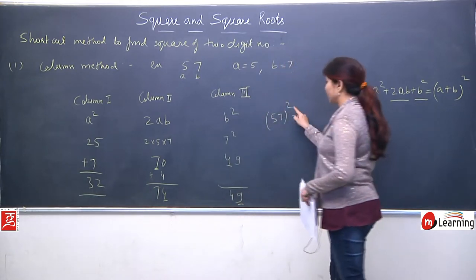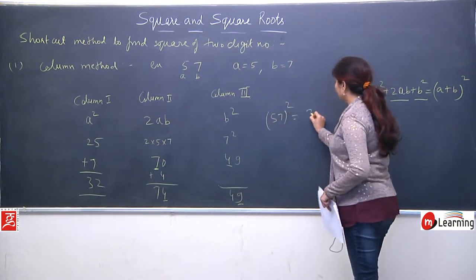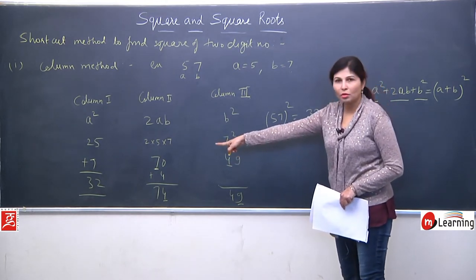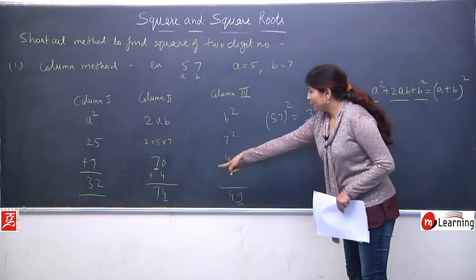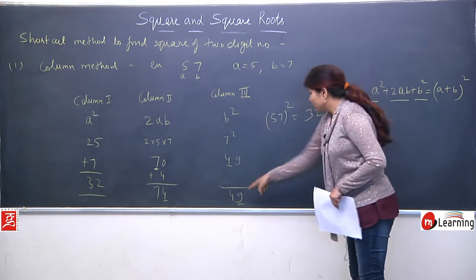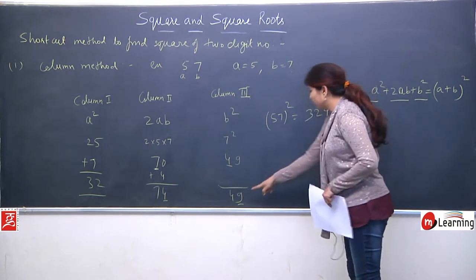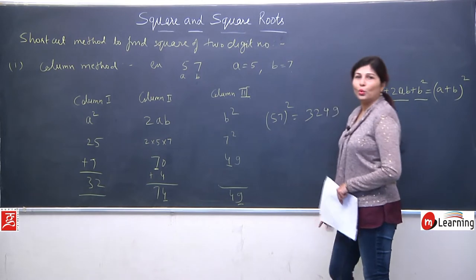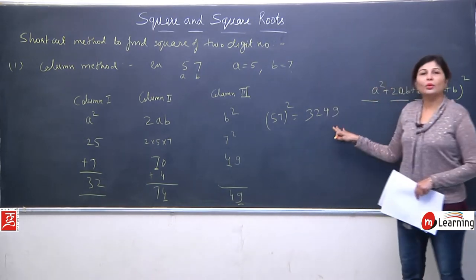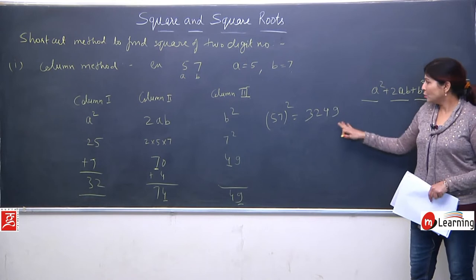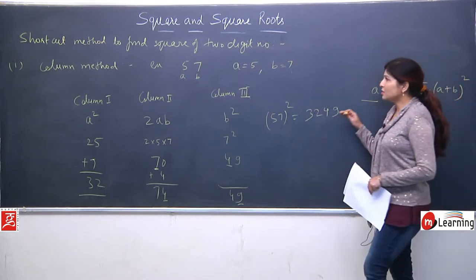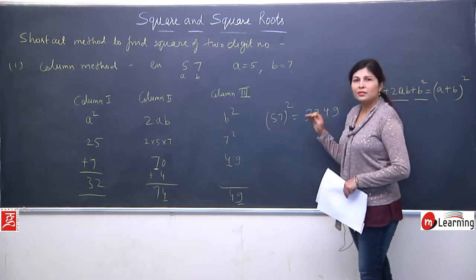The square of 57: from the a² column we take the full final number (32), from the 2ab column we take only the unit place digit (0), and from b² column only the unit place digit (9). So the answer is 3249. You can verify by multiplication — 57 × 57 = 3249.